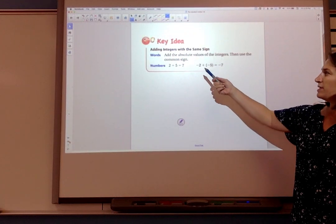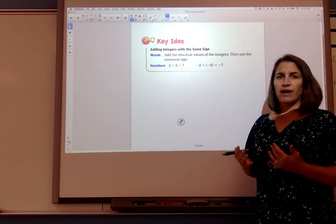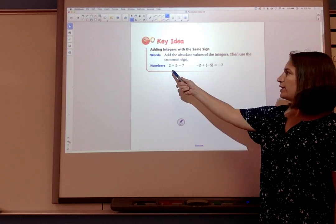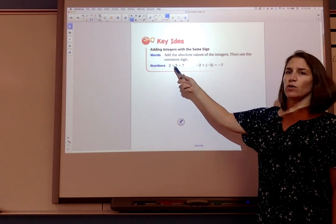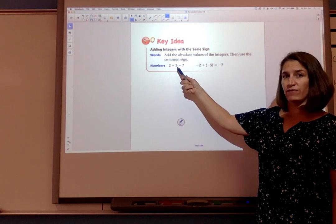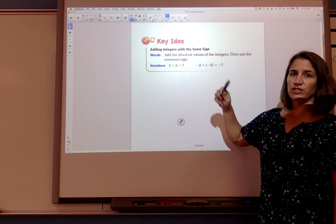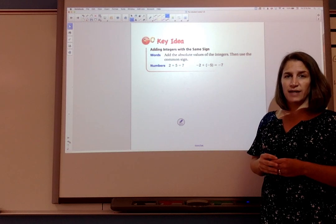Adding integers with the same sign. We're just gonna add the absolute values of the integer and then use the common sign. So here's an example 2 + 5 = 7. We're gonna add the absolute value of 2 plus the absolute value of 5.